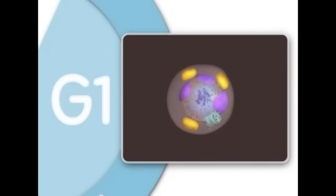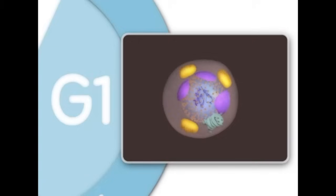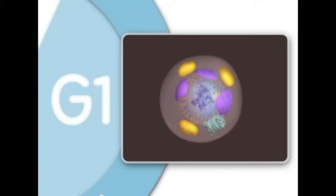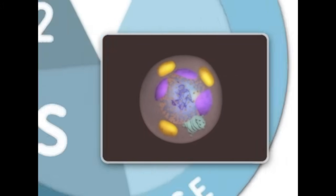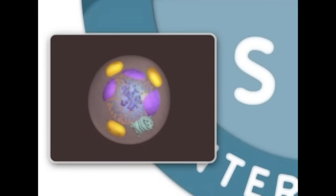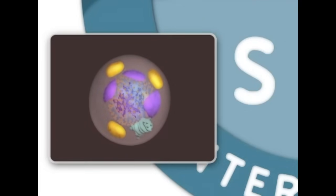G1, or GAP1, is the first growth stage of interphase. In G1, the cell grows to nearly its full size and performs many of its specific biochemical functions that aid the organism. Next is the S, or synthesis phase. This is an important stage because it is during the S phase that DNA in the nucleus is replicated.